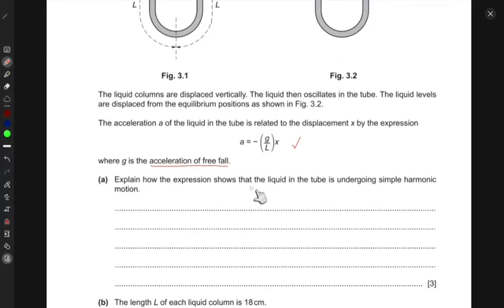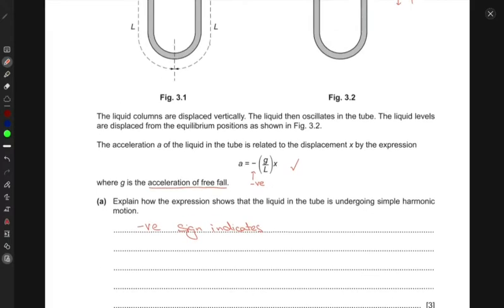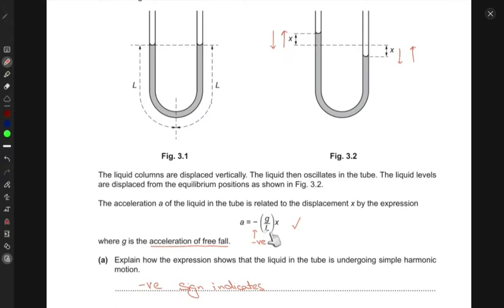Explain how the expression shows that the liquid in the tube is undergoing simple harmonic motion. If you look at this expression, the first thing that you notice is this negative sign. What does that indicate? The negative sign indicates that the acceleration is opposite to the direction of displacement.